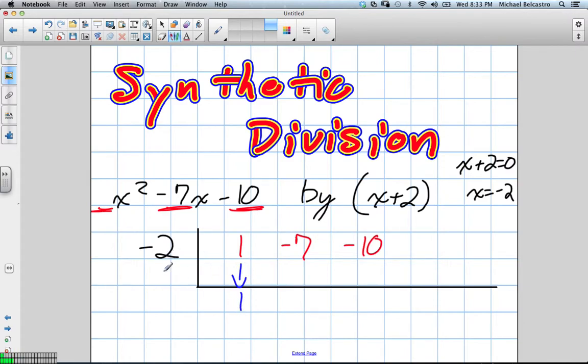So, first of all, this 1, we're going to multiply it by our k value, negative 2. So, 1 times negative 2 gives us what? Negative 2.